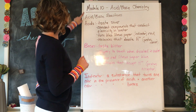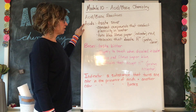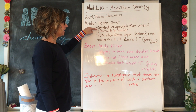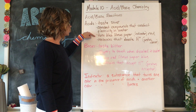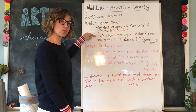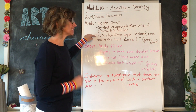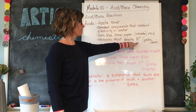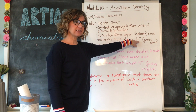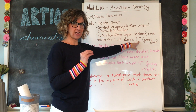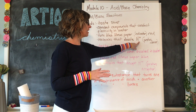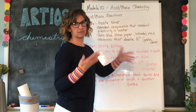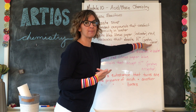Module 10 is about acid-base chemistry. Here are some characteristics of acids: they taste sour, they are covalent compounds that conduct electricity in water, they turn blue litmus paper red — litmus paper is an indicator, which we'll talk about in a moment — and they are molecules that donate a hydrogen ion, written H+. Since a hydrogen atom is only a proton with no electron, we can also call an acid a proton donor.